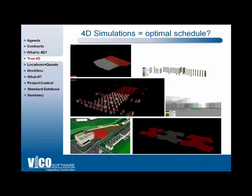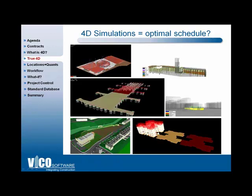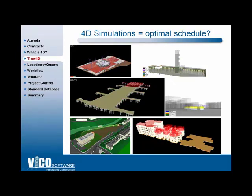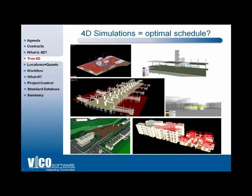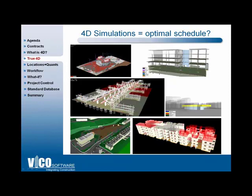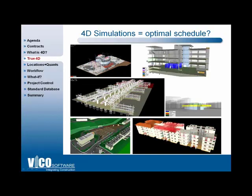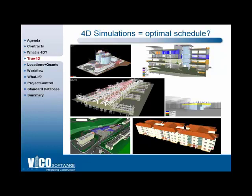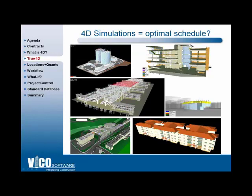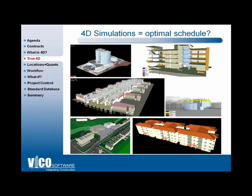Generally in a presentation I don't like to show 4D simulations because it's only a small part of the benefits from connecting BIM to the schedule. I wasn't going to include any, but it's kind of compelling as a byproduct, so here are a few examples. It's very difficult to tell just by looking at these movies whether they're based on real quantities and locations and real resource productivities from the building information model and database. We've all seen these 4D representations, but do they actually represent the most optimum schedule and duration for the project?